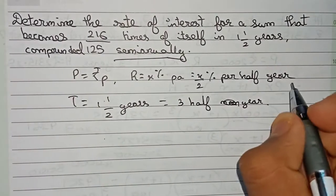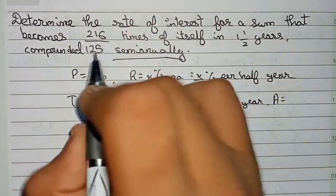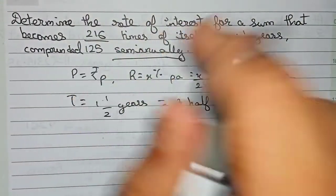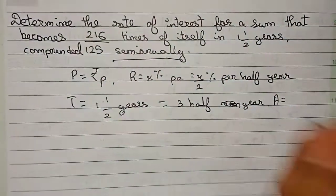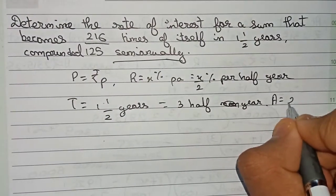And amount is also given. It is given 216 by 125 times of itself. That means 216 by 125 times of the original principle, so it becomes 216 by 125 P.